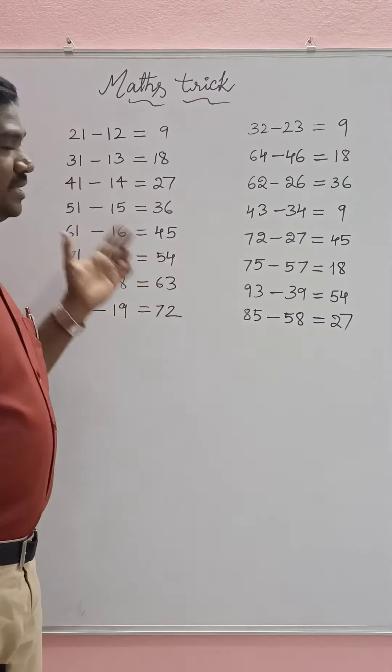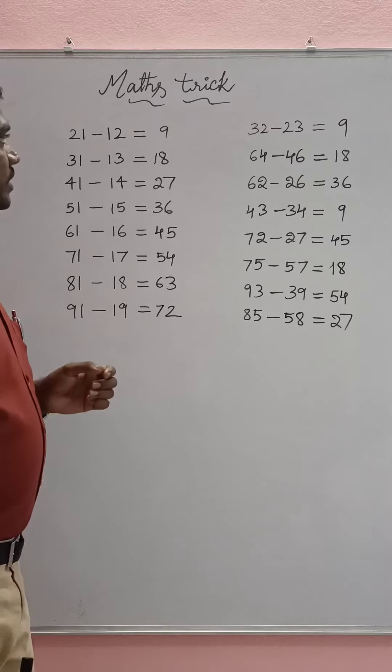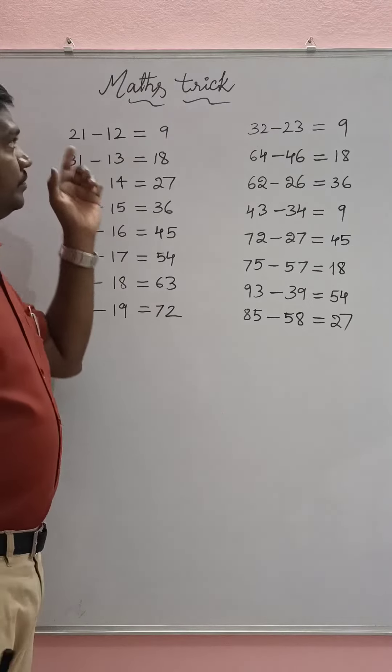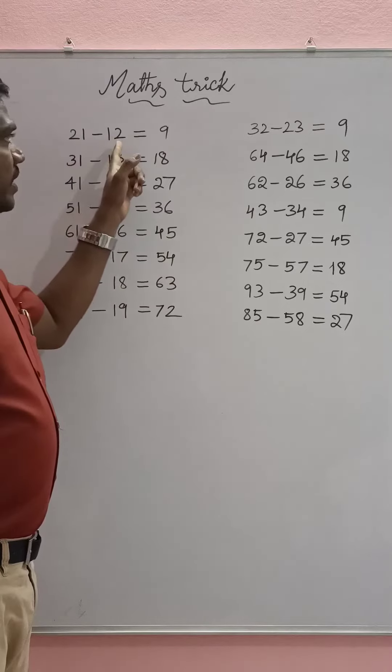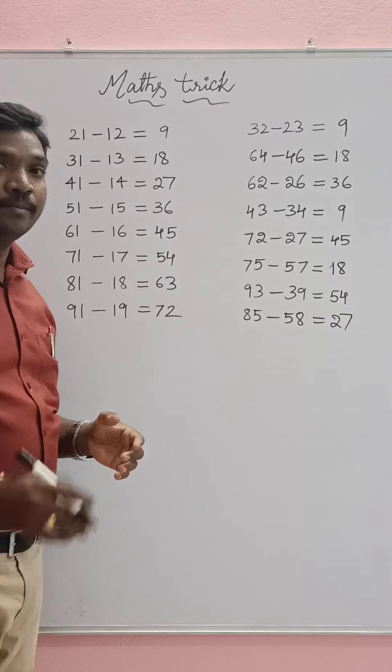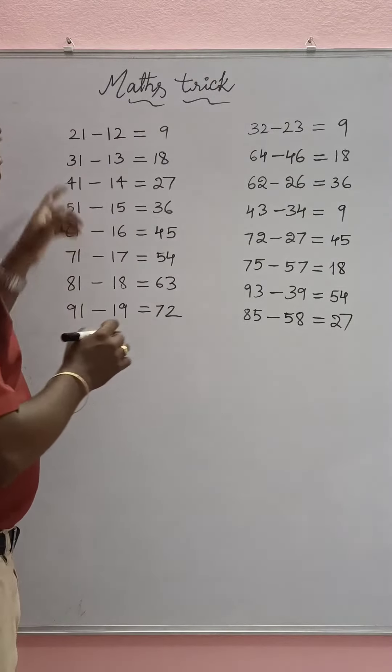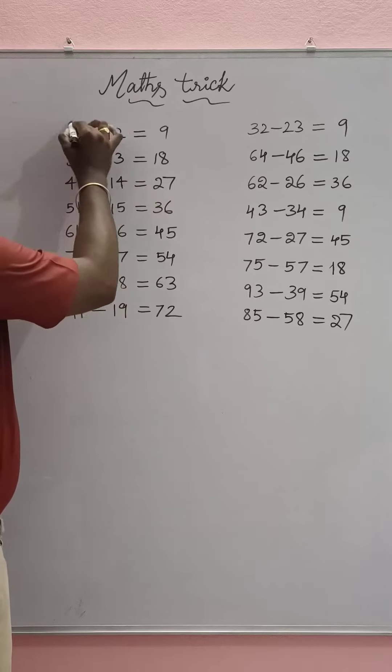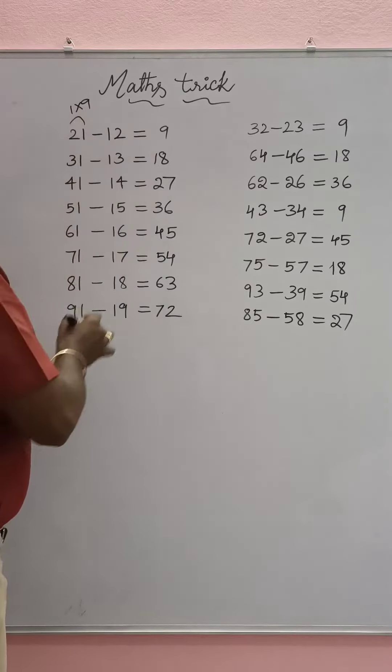Here what is the logic behind this? So the difference between a two-digit number and the number obtained by interchanging the digits must be a multiple of 9. See here: 2 minus 1 is 1, 1 times 9 is 9. Here 3 minus...